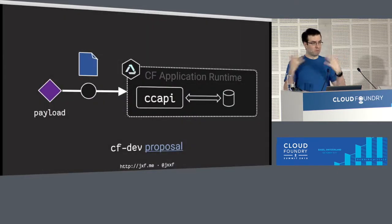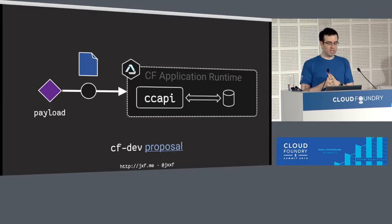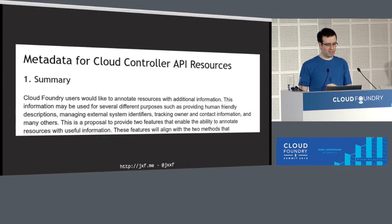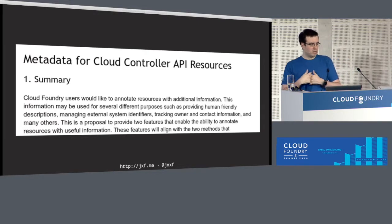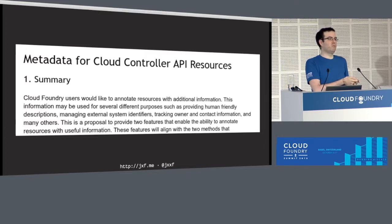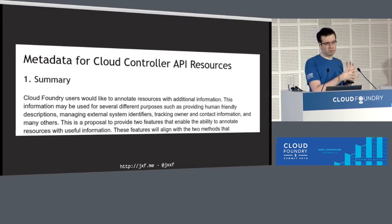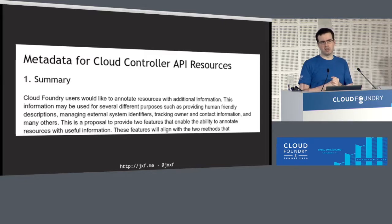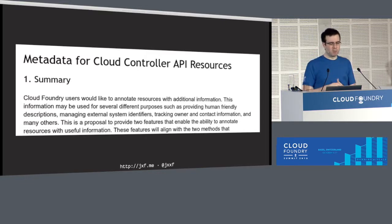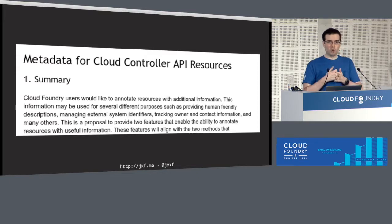I helped write a proposal that has been submitted to CF Dev — the link is in the slides. Essentially the proposal is that if you have an API resource — whether that's an organization, application, space, etc., using 'resource' in the RESTful sense — whenever you have a resource that the Cloud Controller API tracks, you should be able to put metadata on it. That metadata could start as a simple label tagging system of key-value pairs. But that feature isn't here yet.